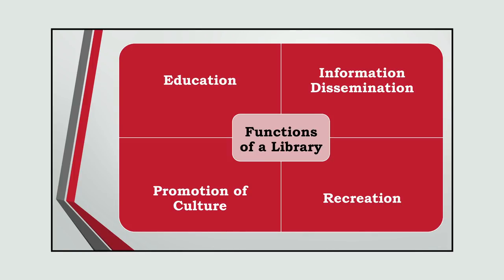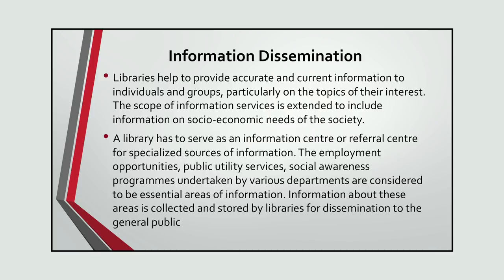Information dissemination is another function. Libraries help to provide accurate and current information to individuals and groups, particularly on the topics of their interest. The scope of information services is extended to include information on socio-economic needs of the society. The library has to serve as an information center or referral center for specialized sources of information. Employment opportunities, public utility services and social awareness programs undertaken by various departments are considered essential areas of information collected and stored by libraries for dissemination to the general public.